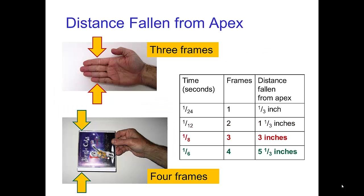Here are a few more values. After three frames, the distance fallen is three inches, which is the width of my fingers. After four frames, it's about the width of a CD. These images are an easy way for me to remember how far something falls in the first few frames. Now you may want to come up with some of your own.